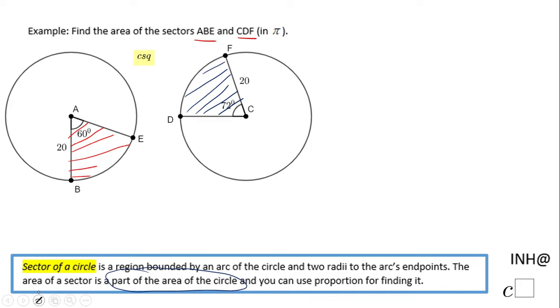Let's start with Circle A. For finding the area we're going to use the formula pi r squared. The radius is 20, and 20 squared is 400. So the area of Circle A is 400 pi, and now we can go and find the area of the sector.